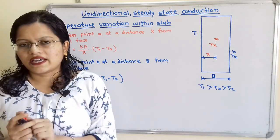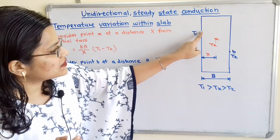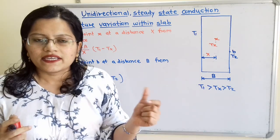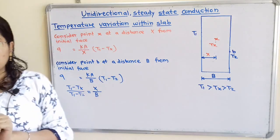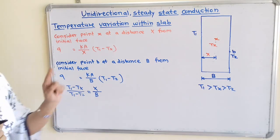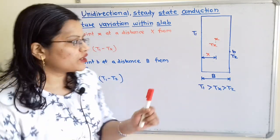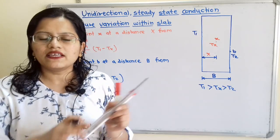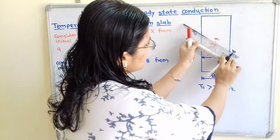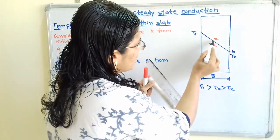The temperature variation between the initial face and any intermediate point X is proportional to the distance between them. Therefore, the temperature variation within the slab is linear. Joining the points T1, TX, and T2 shows that temperature varies linearly.